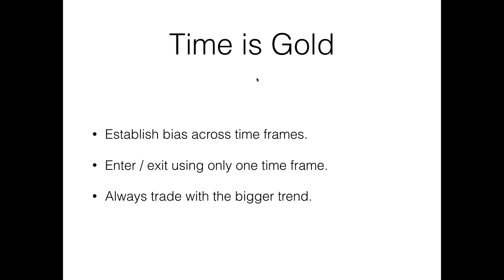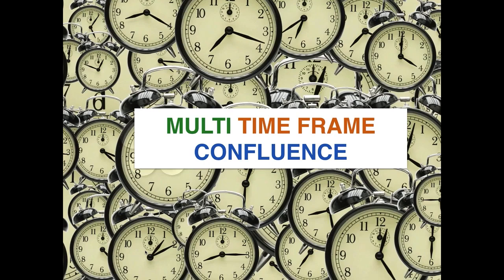You have to establish the bias across time frames. But if you want to focus on the 5-minute chart, you enter and exit using only that chart. This is a high-risk trade because the general trend is a downtrend. Nonetheless, if you still want to trade it, enter and exit using the 5-minute chart. Always trade with the bigger trend. A more favorable position is where all time frames are in agreement — this is called multiple time frame confluence, when all time frames agree on the direction of price.